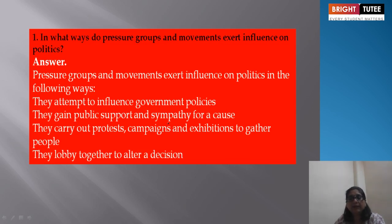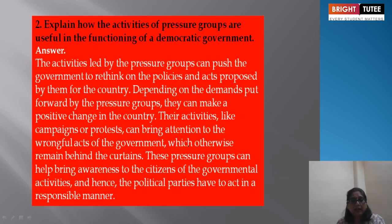Now let's revise the chapter. In what ways do pressure groups and movements exert influence in politics? They attempt to influence government policies, gain public support and sympathy for a cause, and carry out protest campaigns and exhibitions to gather people. They lobby together to alter legislation. The activities of pressure groups are useful — they can push the government to rethink policies and acts proposed by them. Their campaigns or protests can bring attention to wrongful acts of the government which might otherwise remain hidden.